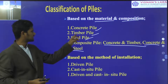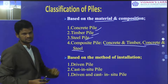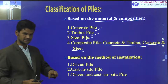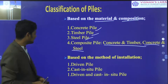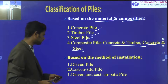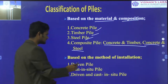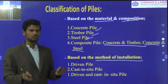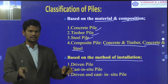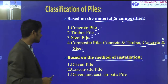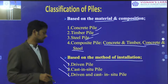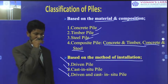The first one is the concrete pile, second one is the timber pile, third one is the steel pile, fourth one is the composite pile — that is combination of concrete with either steel or timber. Next, we are having one more type of classification based on the method of installation. Those are driven piles, cast in-situ pile, and driven and cast in-situ piles.